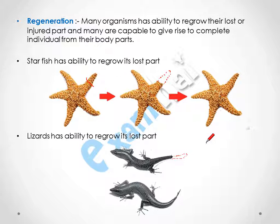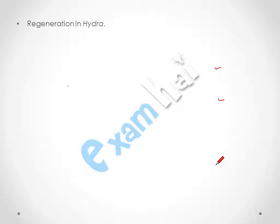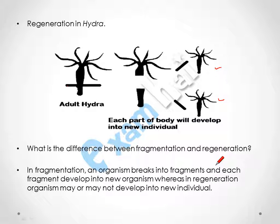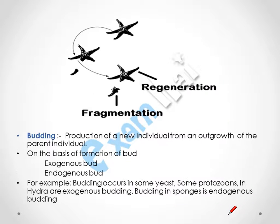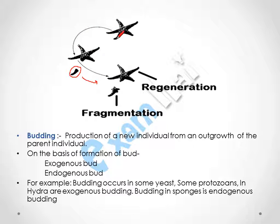The human liver also shows regeneration. In this diagram, if a fragment grows into a new organism, that is fragmentation. But if only an arm is developing on an organism, then that is regeneration.